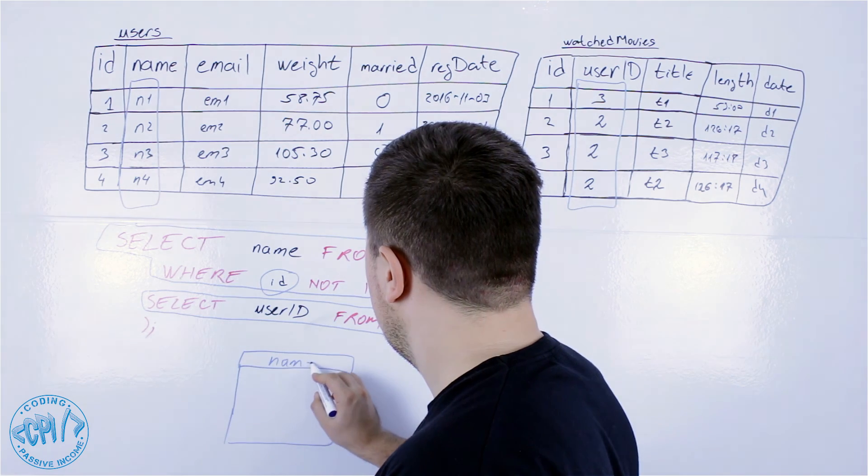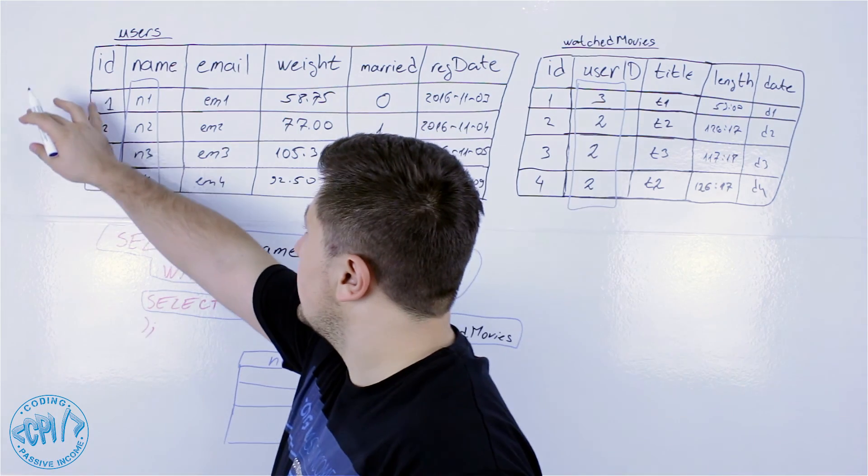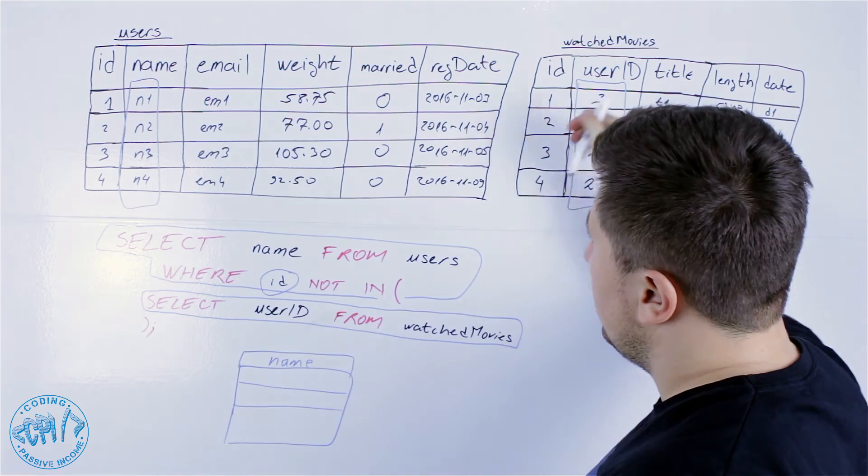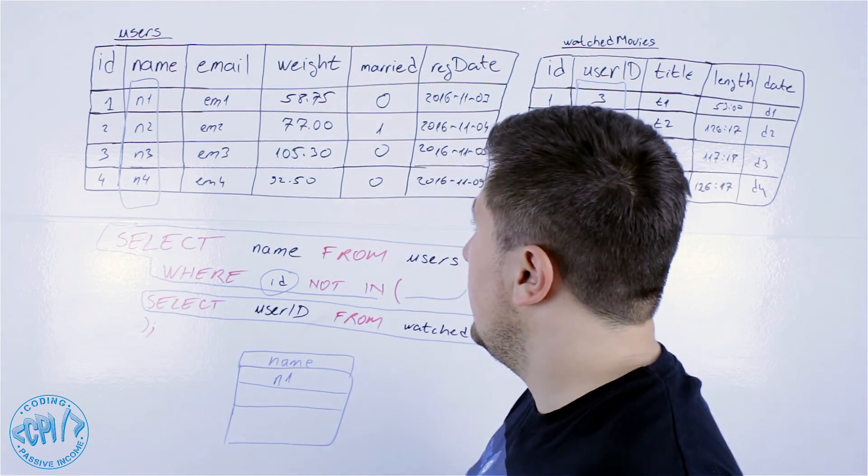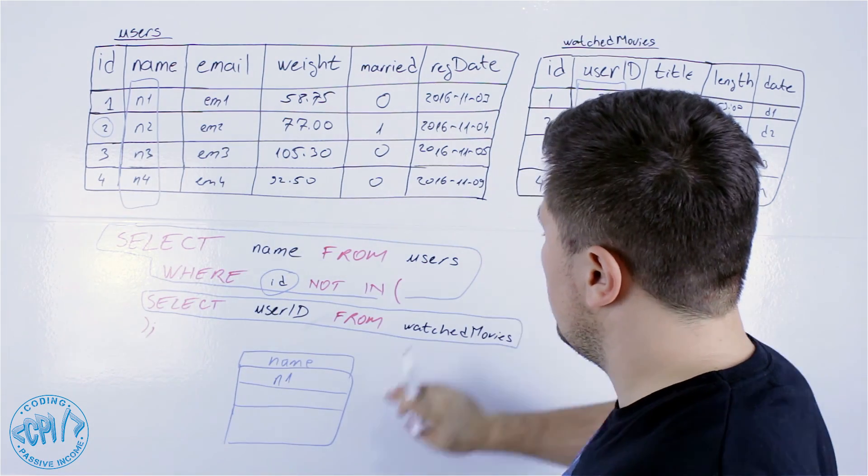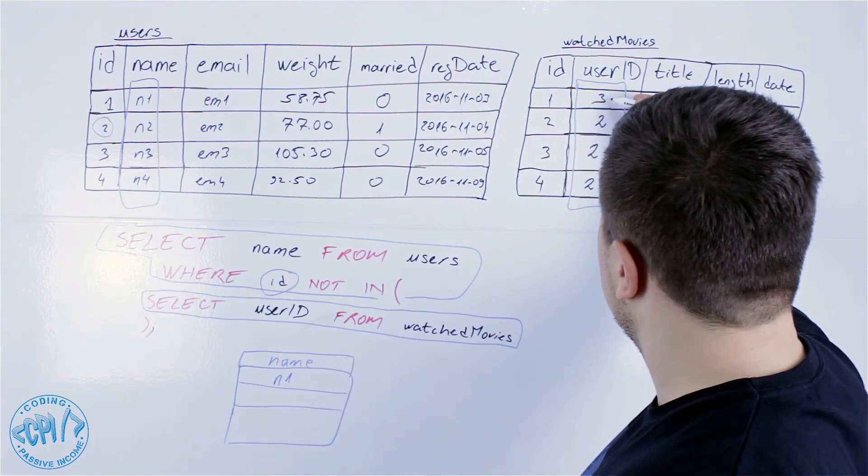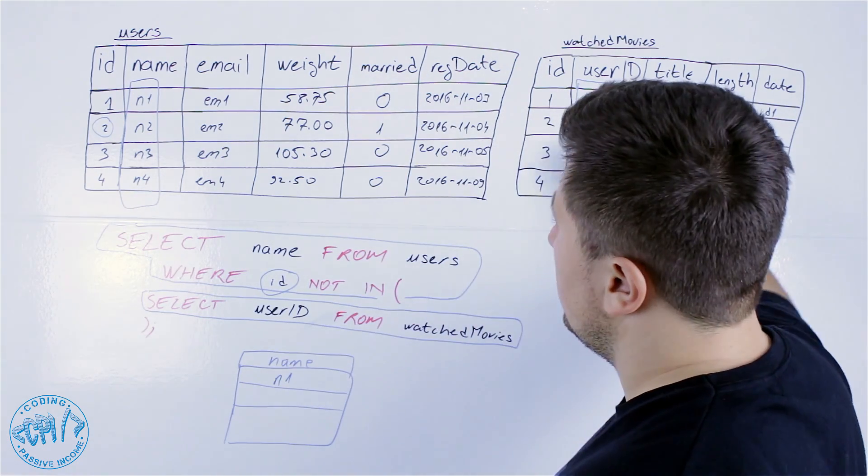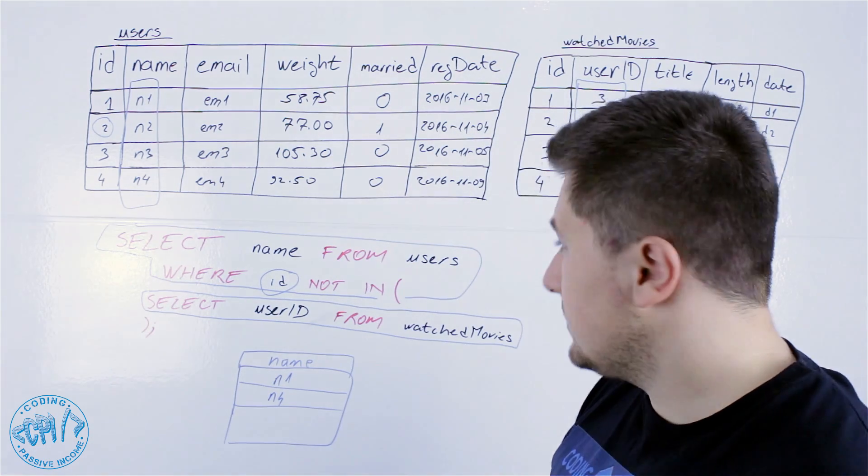And now if we execute this we will get something like this - and this will be name. And now if we check if the ID 1 is inside here, it's not, and the name is N1. And now if we check ID 2, it exists here so we won't display the name here. ID 3 is here and ID 4 doesn't exist here and we will get this.